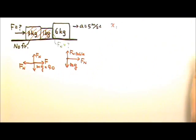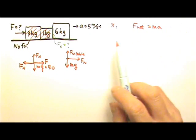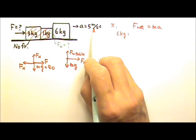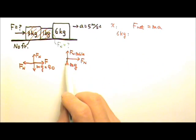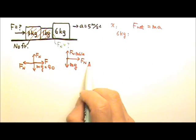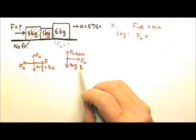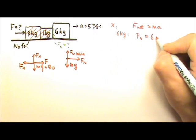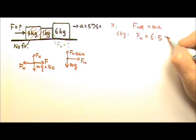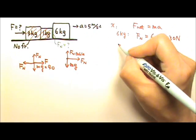Let's look at just the x direction first. We write net force equals M times A. For the 6 kilogram box, the acceleration goes to the right. The normal force is the only horizontal force, so net force equals the normal force. This equals 6 kilograms times 5 meters per second squared. So the normal force is 30 newtons. We found the first unknown.